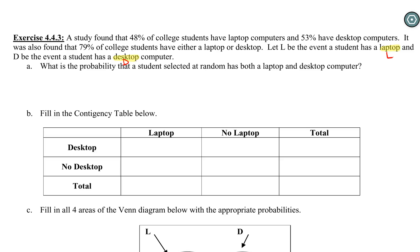We can go through the entire question looking for those words and the percentages. The study showed that 48% of college students have a laptop, and 53% have desktop computers. It was also found that 79% of college students have either a laptop or a desktop. Our final question tells us the probability we want to find: what is the probability that someone has both a laptop and a desktop, so P(L and D).